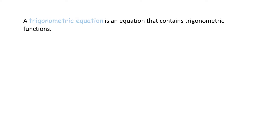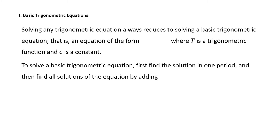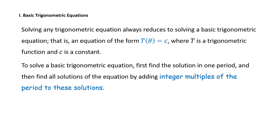We define a trigonometric equation as an equation that contains trigonometric functions. Roman numeral 1: Basic Trigonometric Equations. Solving any trigonometric equation always reduces to solving a basic trigonometric equation — that is, an equation of the form t(θ) = c, where t is a trigonometric function and c is a constant. To solve a basic trigonometric equation, first find the solution in one period, and then find all solutions by adding integer multiples of the period to these solutions.